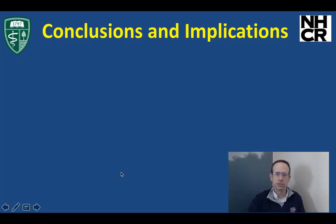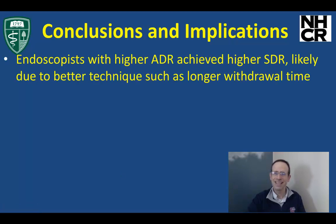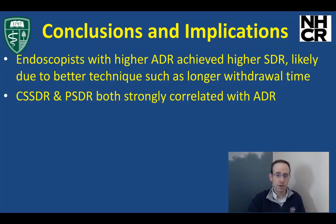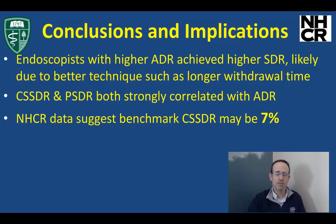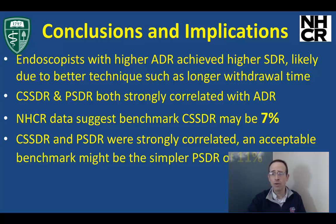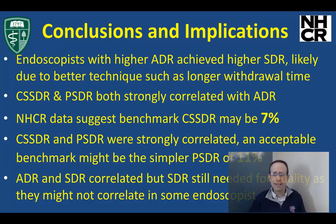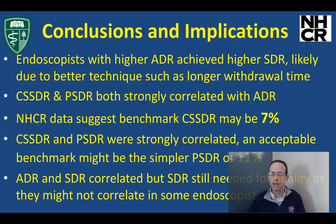The conclusion was that endoscopists with higher ADR achieved higher SDR, likely due to better technique such as withdrawal time — but remember, this was not correlated in everybody. Both rates did correlate with ADR. Our data suggests that if you have an ADR of 25% as your goal, your corresponding CSDR should be 7%. And since the CSDR and PSDR were correlated, an acceptable benchmark might be the simpler PSDR of 11% — meaning 11% of all exams should have a serrated polyp proximal to the sigmoid. I want to caution the viewers that since they were correlated, some might feel the SDR is superfluous; however, we feel it's still needed for quality as they may not be correlated in some endoscopists. Some endoscopists may have a high ADR and a low SDR, so once you achieve adequate ADR and SDR, you can use ADR as a surrogate, but we still feel that SDR rate is still needed.